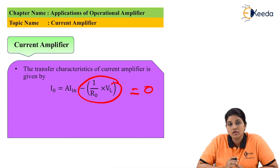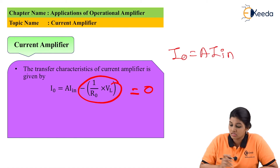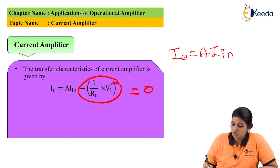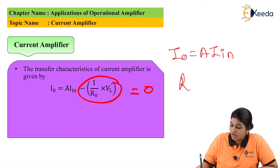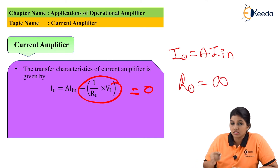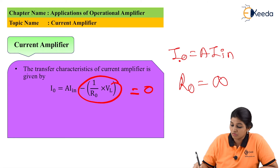When we make the second term equals to zero, we get the equation IO = A·IN, which indicates that the output current is now only dependent upon the input current and not on the load voltage. For making the second term equal to zero, it is important to make RO equal to infinite. When RO equals infinite, anything divided by infinity becomes zero, so the second term equals zero. From this we obtain IO = A·IN, indicating that input current and output current have a direct relationship.